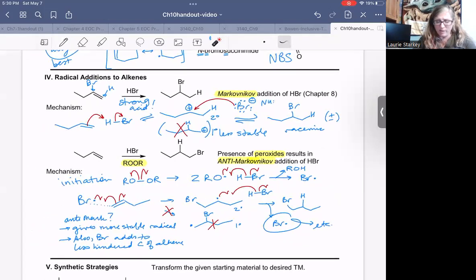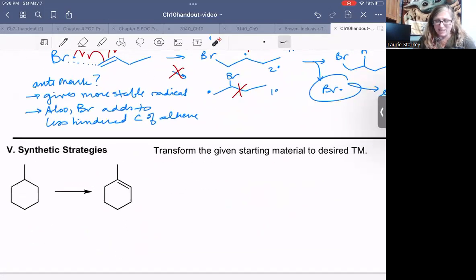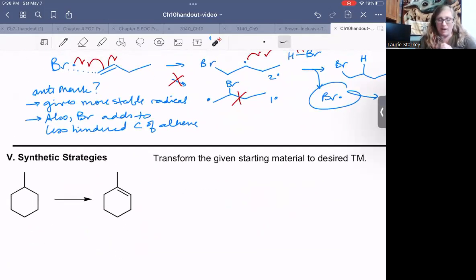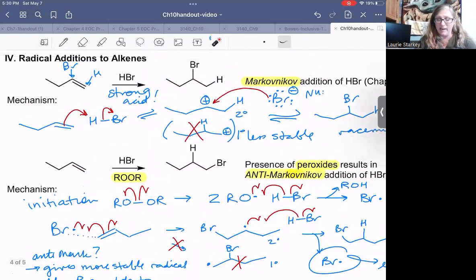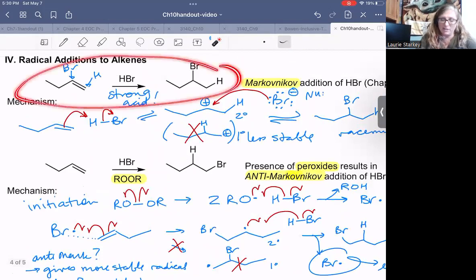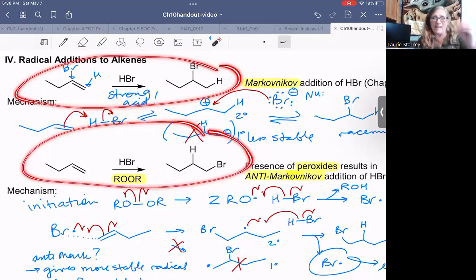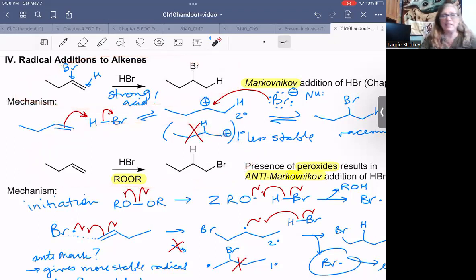What else can we talk about? How about some synthetic strategies? Now that we know about this free radical halogenation reaction, we just looked at how this is great synthetic strategies. Anytime you have two reactions or reaction conditions that are complementary to each other, this is Markovnikov, this gives anti-Markovnikov. That's fantastic to have in our synthetic toolbox because it gives us a lot more variety.